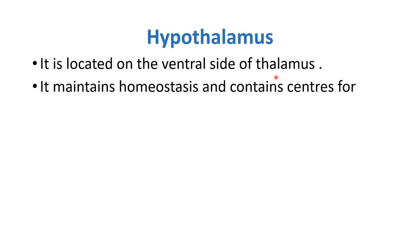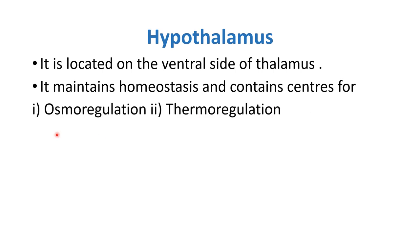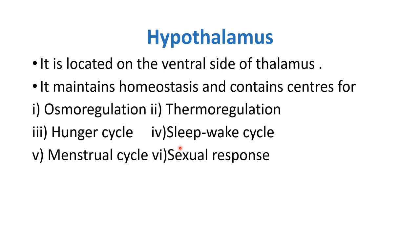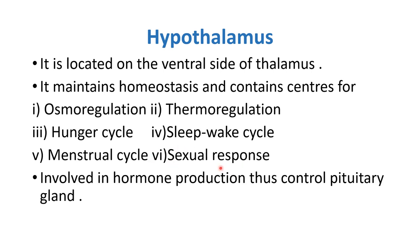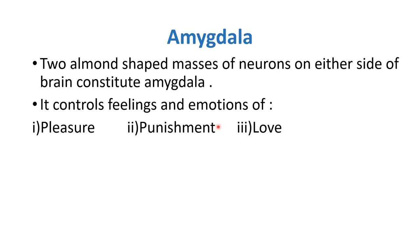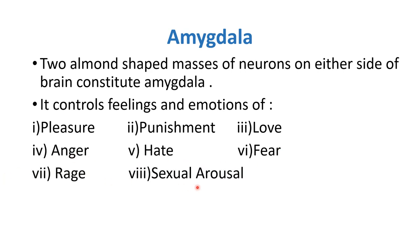The hypothalamus is located on the ventral side of the thalamus. It maintains homeostasis and contains centers for osmoregulation, thermoregulation, hunger cycle, sleep-wake cycle, menstrual cycle, sexual response, hormone production, and thus controls the pituitary gland. The next part of the limbic system is the amygdala — two almond-shaped masses of neurons on either side of the brain. It controls feelings and emotions: pleasure, punishment, love, anger, hate, fear, rage, and sexual arousal.